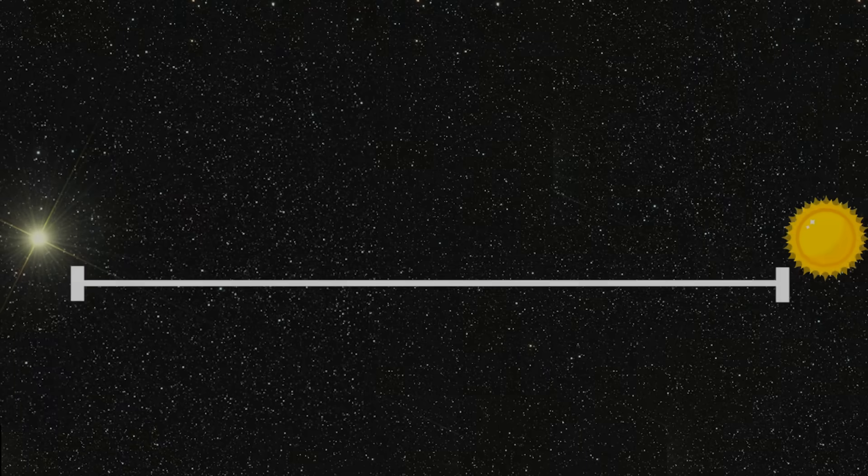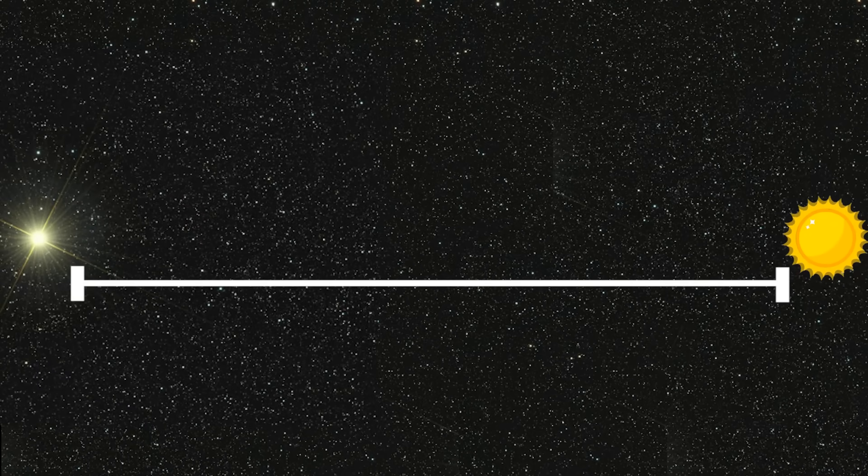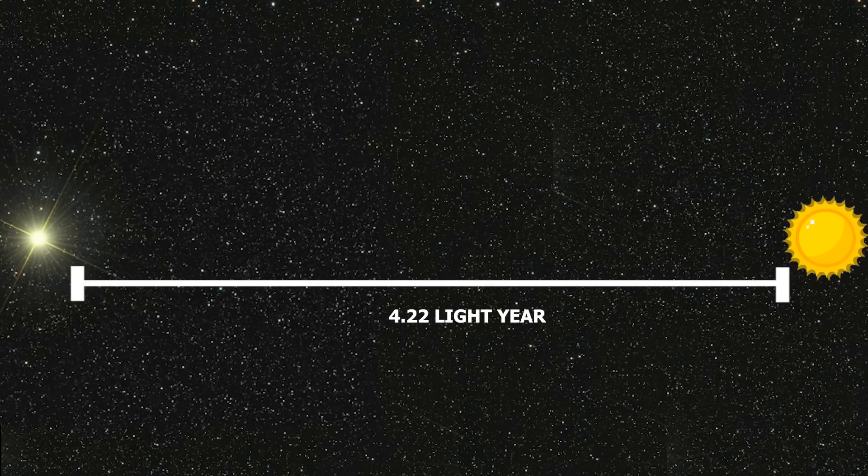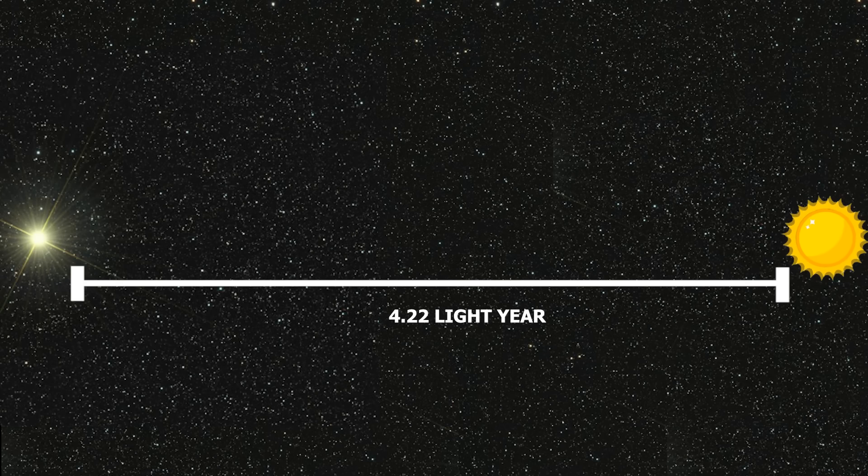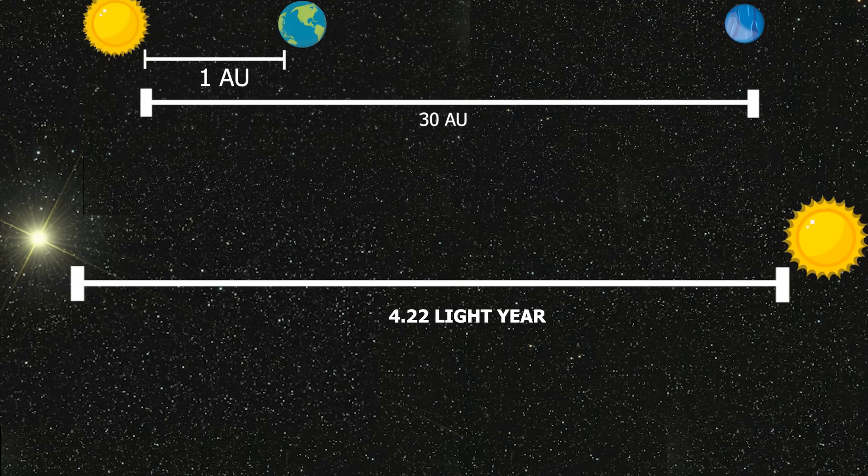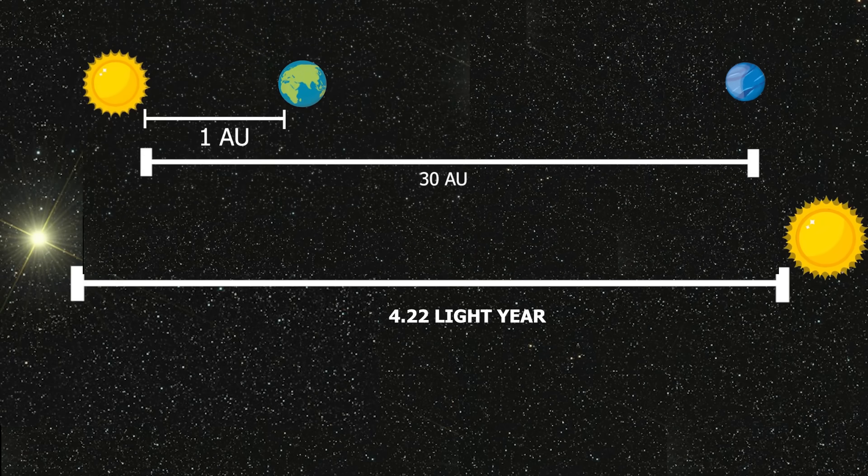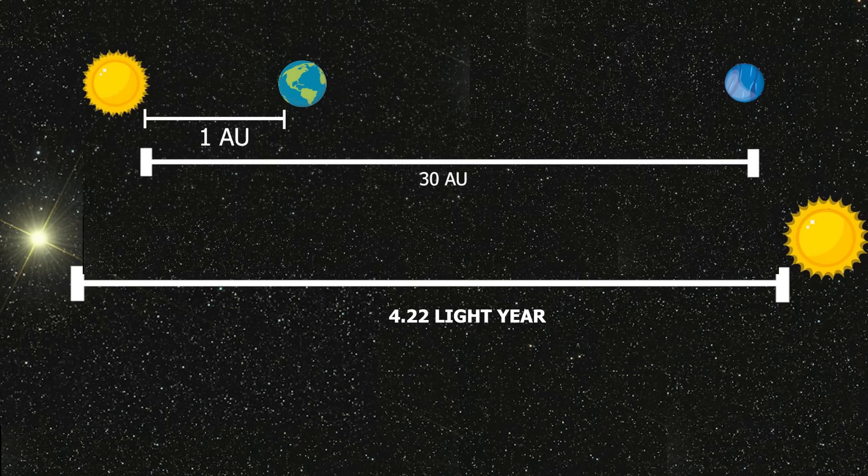If we use light year as unit of distance, distance between our Sun and Alpha Centauri comes out to be 4.22 light years. So you can see that using light year, distance between stars can be represented easily, and using astronomical units, distance between planets can be represented easily.